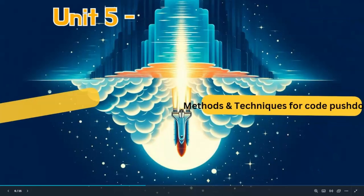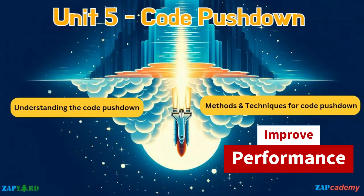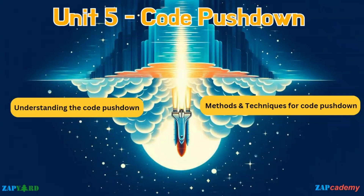Code pushdown is a powerful optimization technique in ABAP SQL that can significantly improve query performance, thanks to HANA database innovation. By moving certain computations from the application server to the database server, code pushdown allows the database to process data more efficiently, leading to faster query execution times and reduced load on the application server. In this session, we will explore the concepts of code pushdown and discuss various methods and techniques for achieving it on cloud, covering topics such as SQL expressions, join conditions, and aggregate functions.